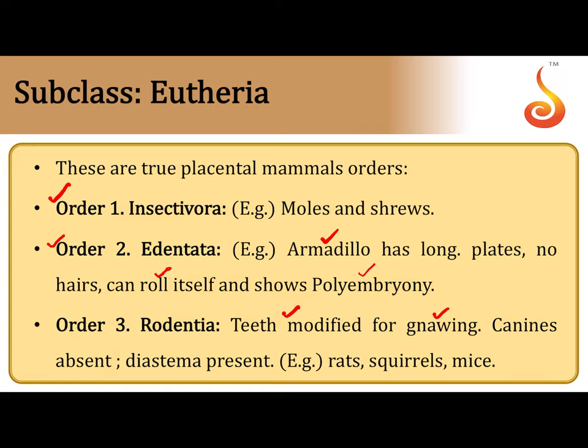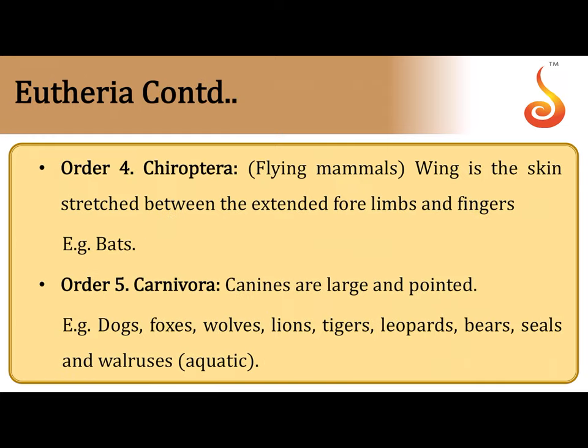Rodentia have teeth modified for gnawing or biting, no canines, and a gap between their incisors and molars called the diastema. Examples include rats, squirrels, and mice. The fourth order is Chiroptera — the flying mammals — which includes bats.